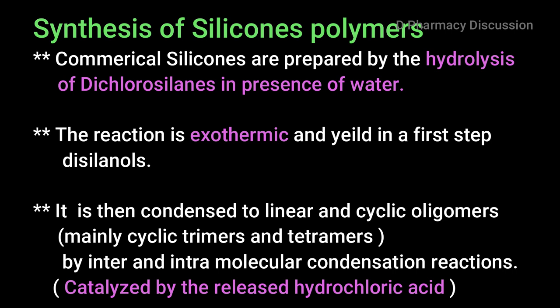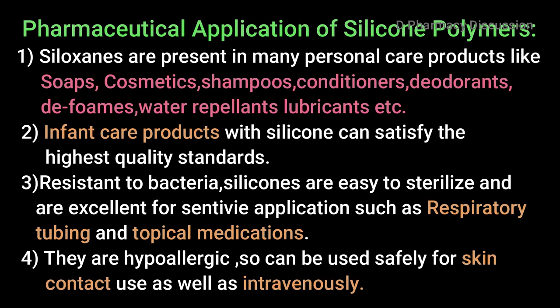Pharmaceutical applications of silicon polymers: siloxanes are present in many personal care products like soap, cosmetics, shampoos, conditioners, deodorants, defoamers, and so on. Infant care products with silicone can satisfy the highest quality standards. Being resistant to bacteria, silicones are easy to sterilize and are excellent for sensitive applications such as respiratory tubings and topical medications. They are hypoallergenic, so they can be used safely for skin contact as well as intravenously.